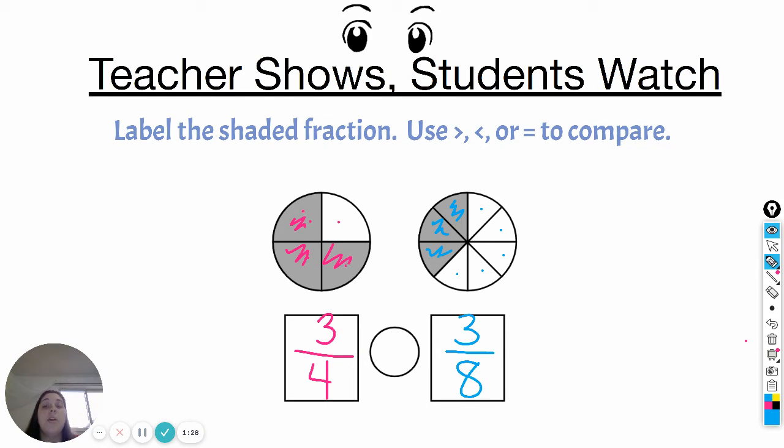We did say that our numerator should be the same, because we're comparing fractions with the same numerator. So both fractions have a three on the top. Now we need to compare using greater than, less than, or equal to.